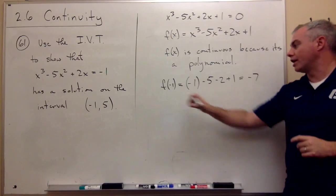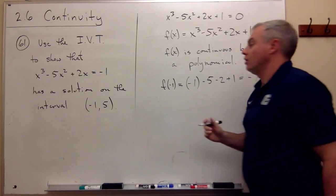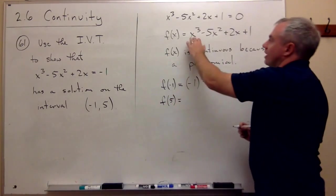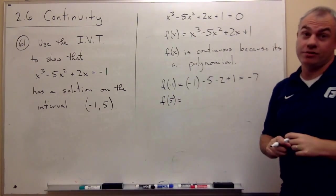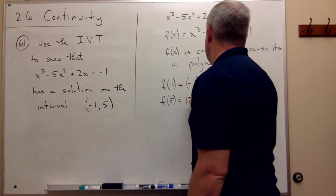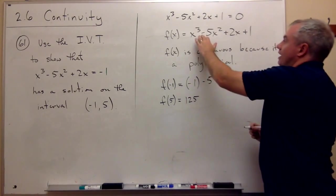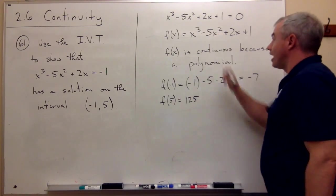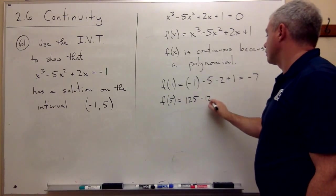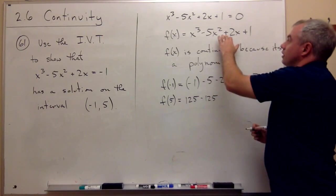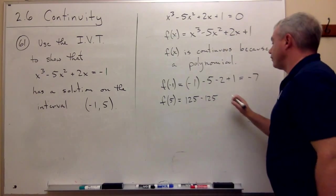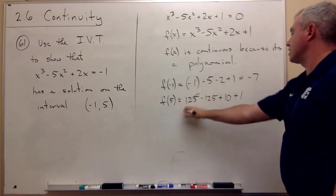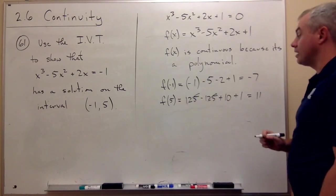What if I plug in 5? Well, if I plug in 5, I get 5 cubed, which is 125, minus 5 times 5 squared. Well, 5 times 5 squared is 5 cubed, so minus 5 cubed, so minus 125, plus 2 times 5, which is plus 10, plus 1. So these cancel. 10 plus 1 is 11, and I get a positive value.